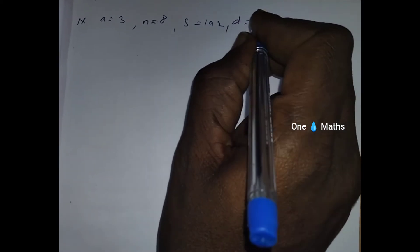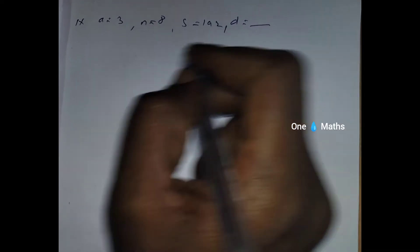If they are given A equals 3, N equals 8, S equals 192, what is the D value they ask to find?